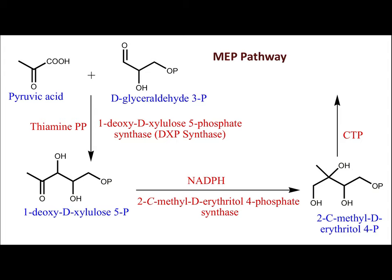In the structure of 1-deoxy-D-xylulose 5-phosphate, xylulose is a five-carbon sugar with carbons in a straight chain. In xylulose, there is a hydroxyl group at position one, but that hydroxyl is missing in 1-deoxy-D-xylulose 5-phosphate — hence the name '1-deoxy.' Additionally, a phosphate group is added at position five, so the compound is named 1-deoxy-D-xylulose 5-phosphate.